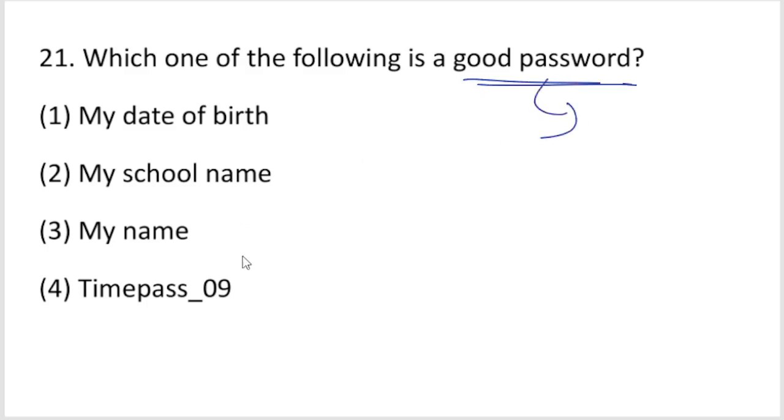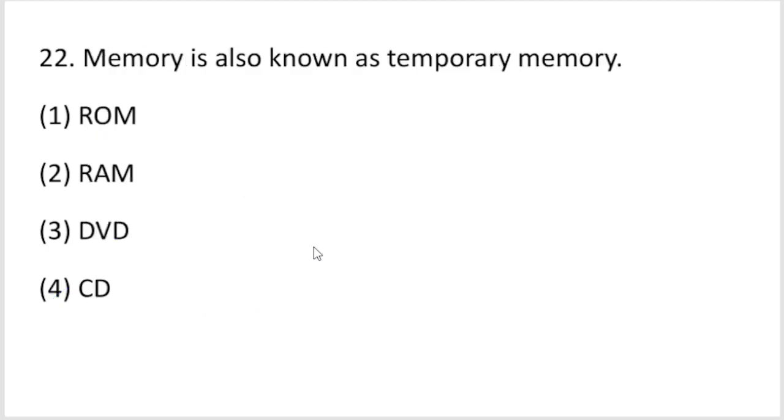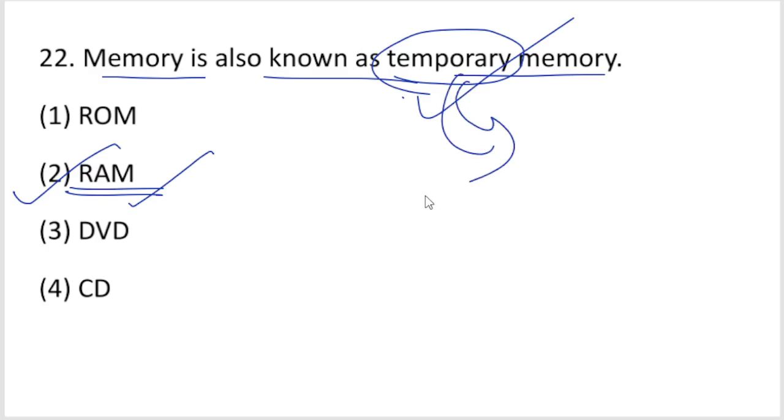Which one of the following is a good password? Not your mother's name, date of birth, only alphabets, or school name with only alphabets. Option four is the right answer - using alphabets, numerals and special characters together. RAM is also known as temporary memory - it's temporary memory where data is erased when power is cut.